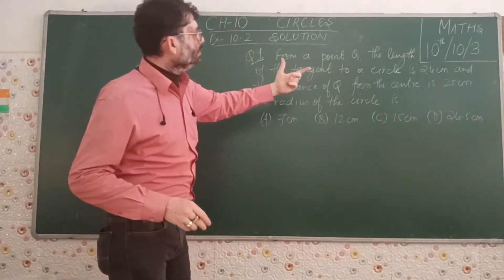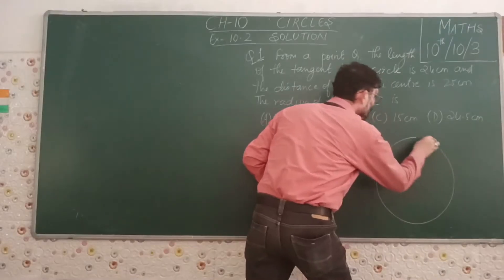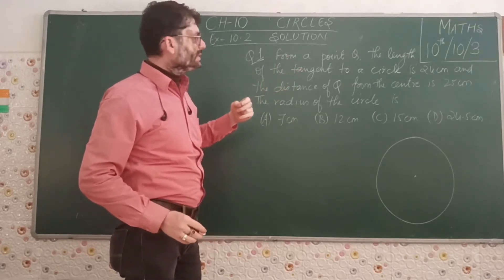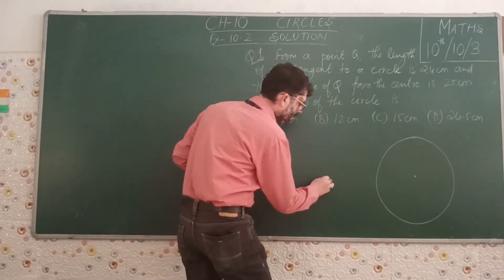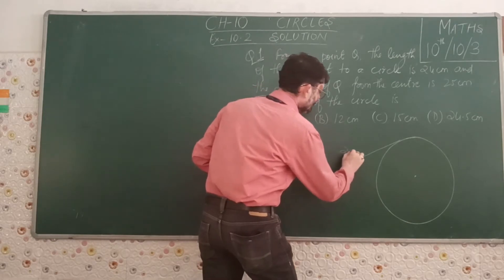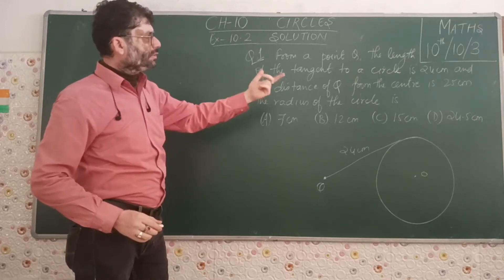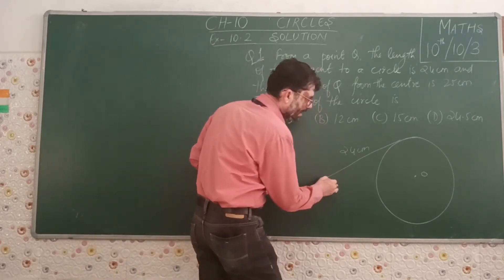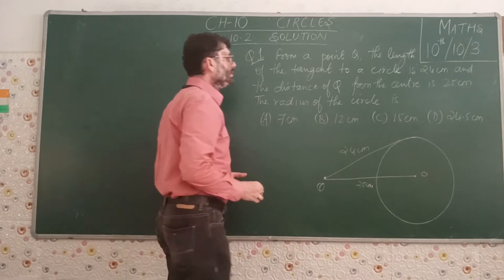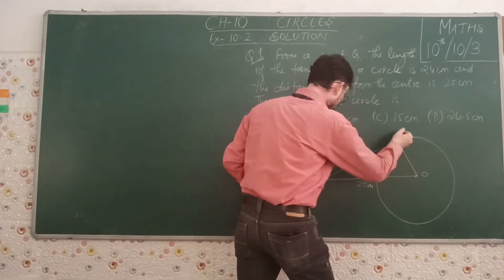From a point Q, the length of the tangent to a circle is 24 cm. We have a circle with center O, and Q is an external point. The length of the tangent is 24 cm. The distance of Q from the center O is 25 cm. We need to find the radius of the circle.